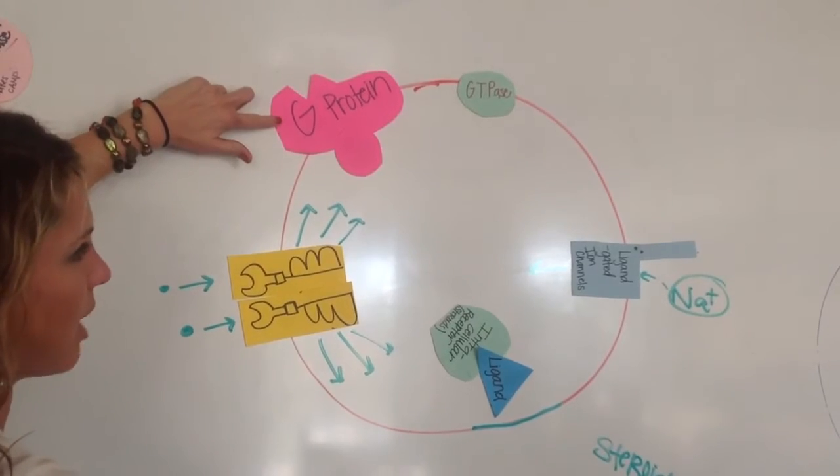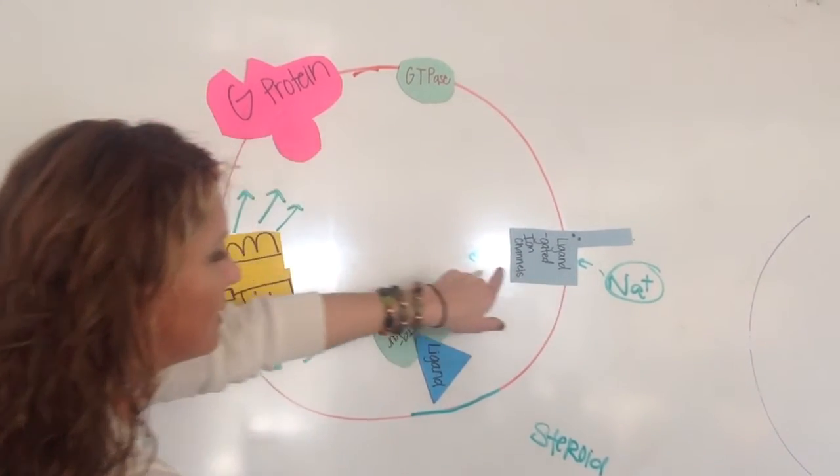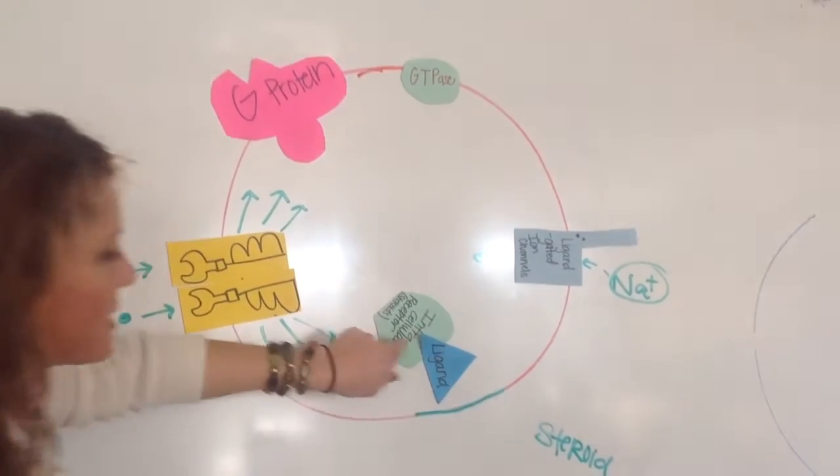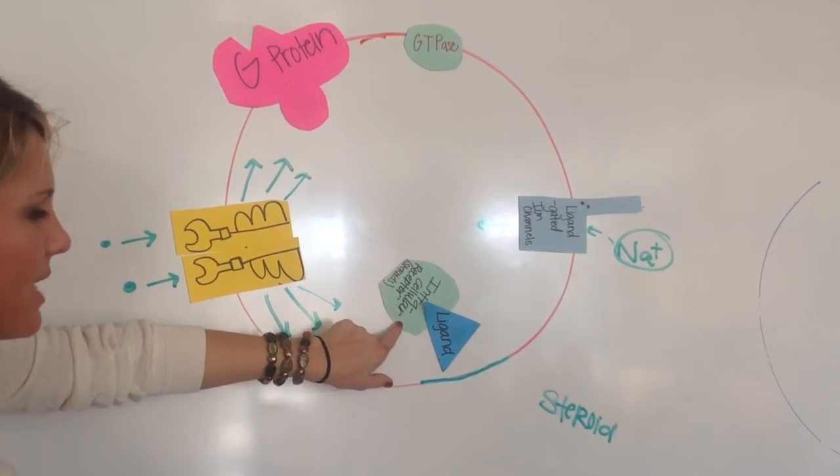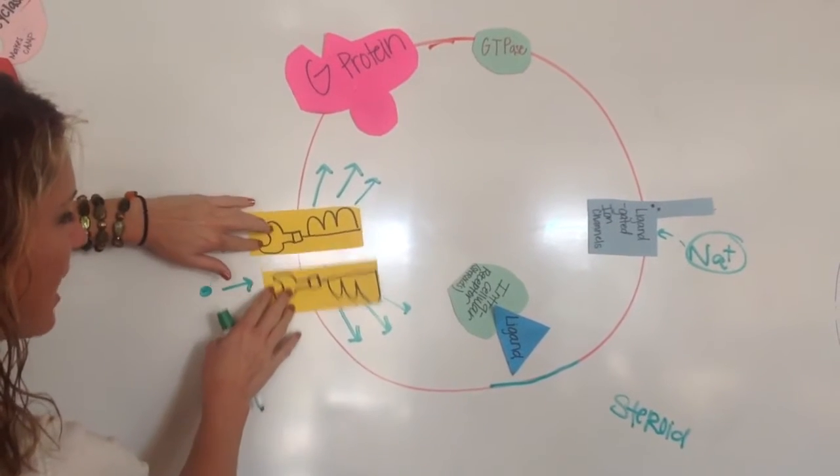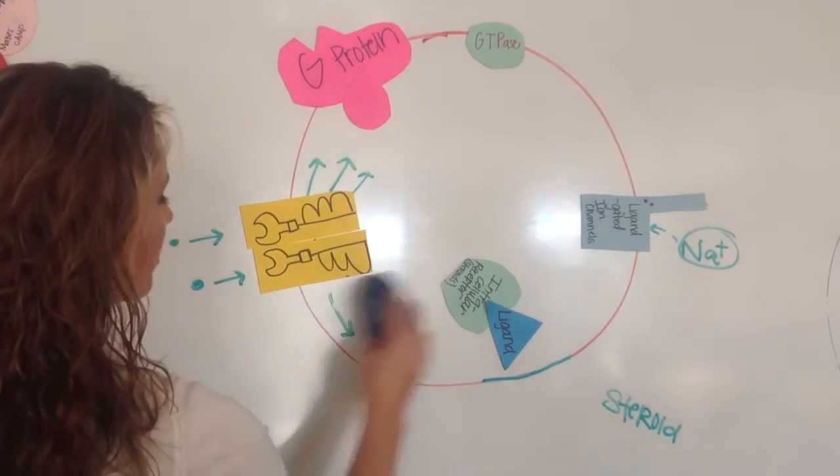So we have G-protein, which is most common. This one allows ions in. This one is for steroids, and it's inside. You want to know that steroids bind on the inside of the cytoplasm. And then tyrosine kinase is for quick amplification, for emergency repair.